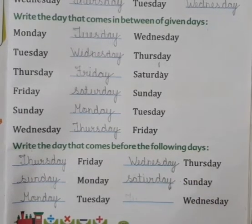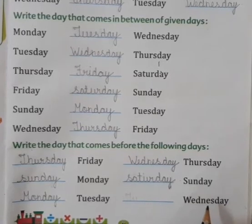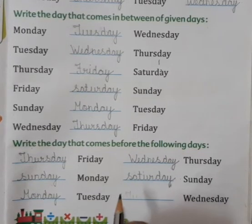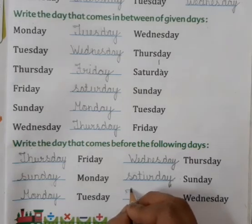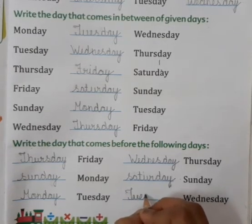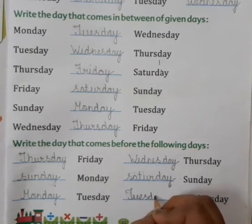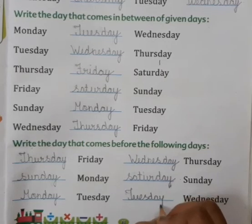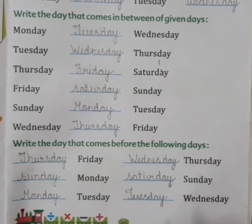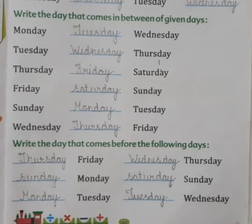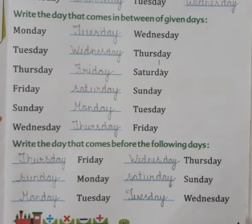And next is Wednesday — Wednesday se just pehle aata hai Tuesday. So we will write T-U-E-S-D-A-Y, Tuesday. Tuesday, Wednesday. I hope kids this workout is clear to you. We will soon meet with a new topic. Stay safe, stay healthy and do practice at your home. Thank you.